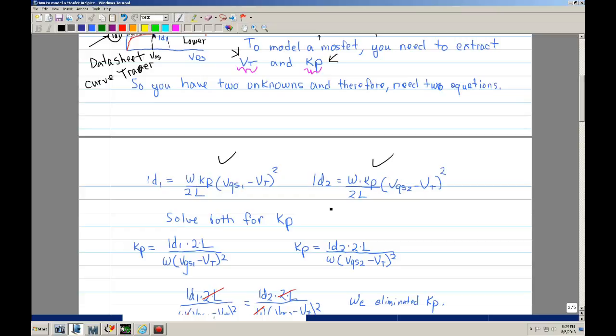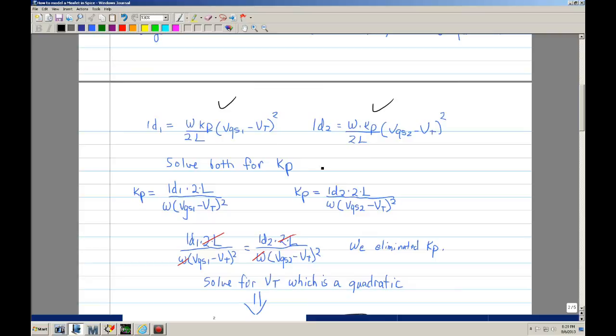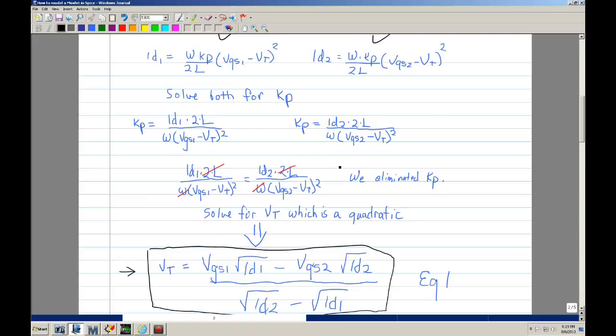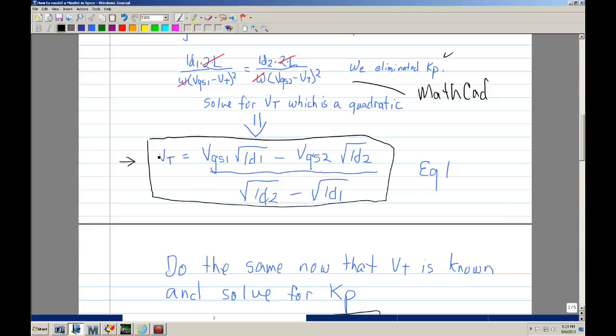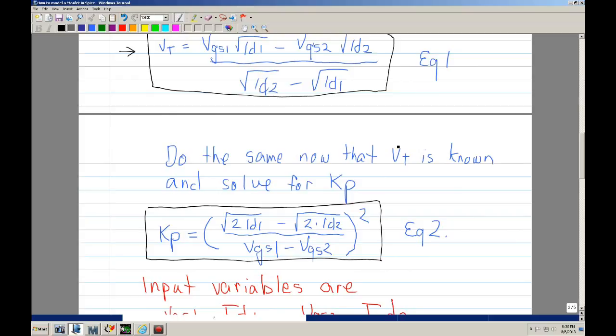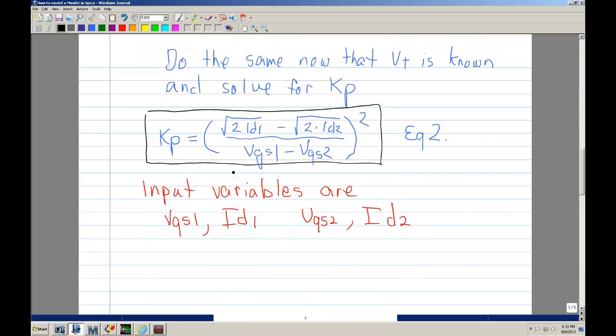You get this equation. This equation. And what you do is you solve for KP. Once you have for KP, you can set them equal to each other. And basically, once we've done that, we've eliminated KP. And what you want to do is you want to solve for VT. What you get is you end up with a quadratic equation. And it's very tedious. What I did is I went ahead and actually put this equation into MathCad. And I did the symbolic equation. And I ended up with this equation.